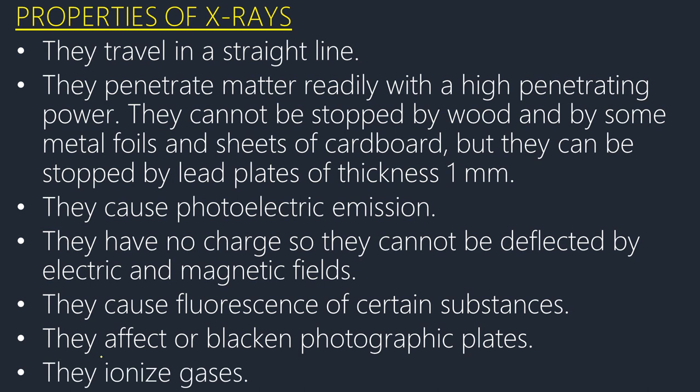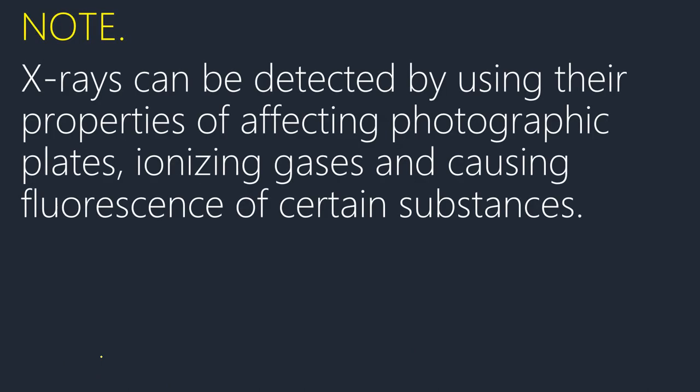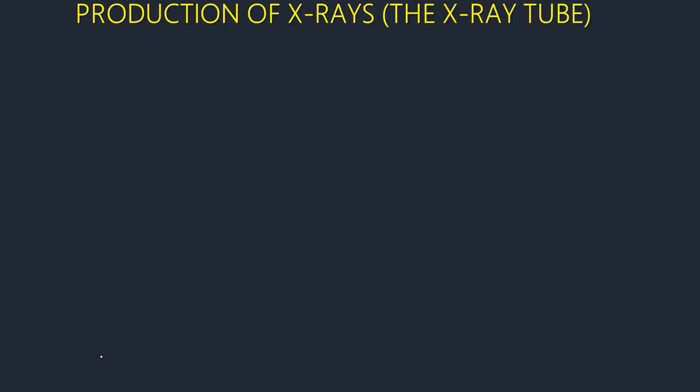Note: X-rays can be detected using their properties of affecting photographic plates, ionizing gases, and causing fluorescence of certain substances. Now, how do we produce X-rays? We use what we call the X-ray tube.